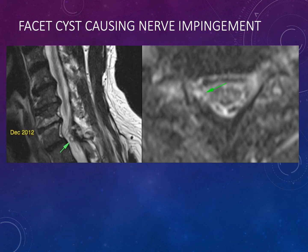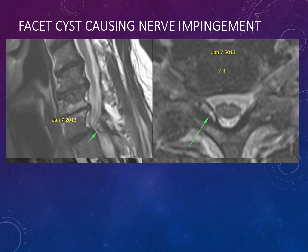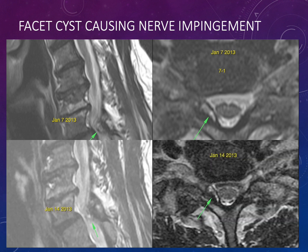Here is an example of a patient with facet arthrosis and a very tiny facet cyst causing impingement on the nerve root. One month later the cyst has increased significantly in size, and it remains persistently large thereafter. When you have facet arthrosis, facet cysts can develop and impinge upon the nerve roots, so you should look carefully for them.